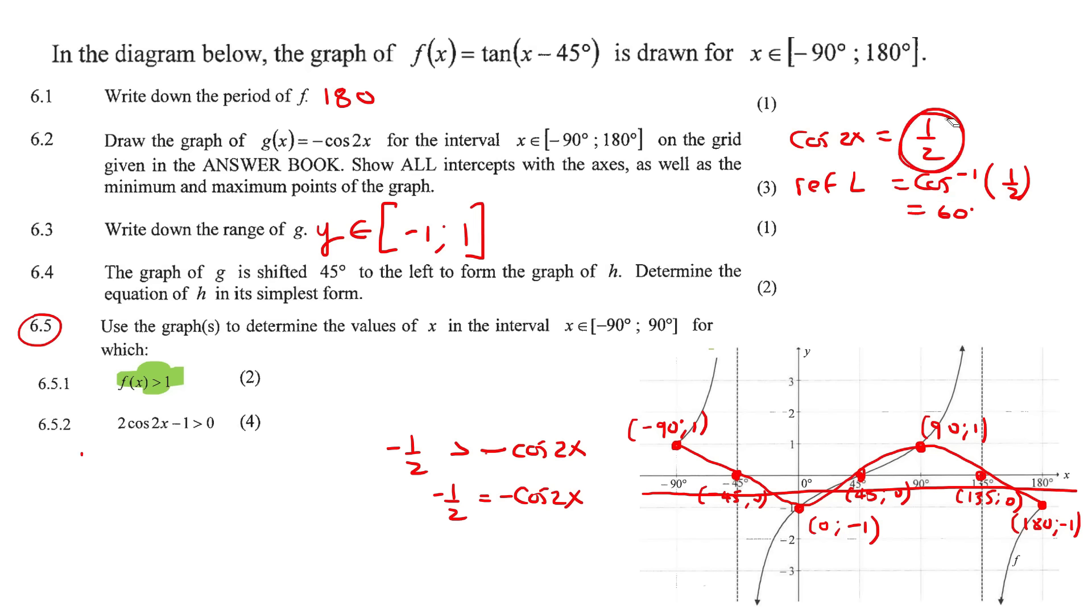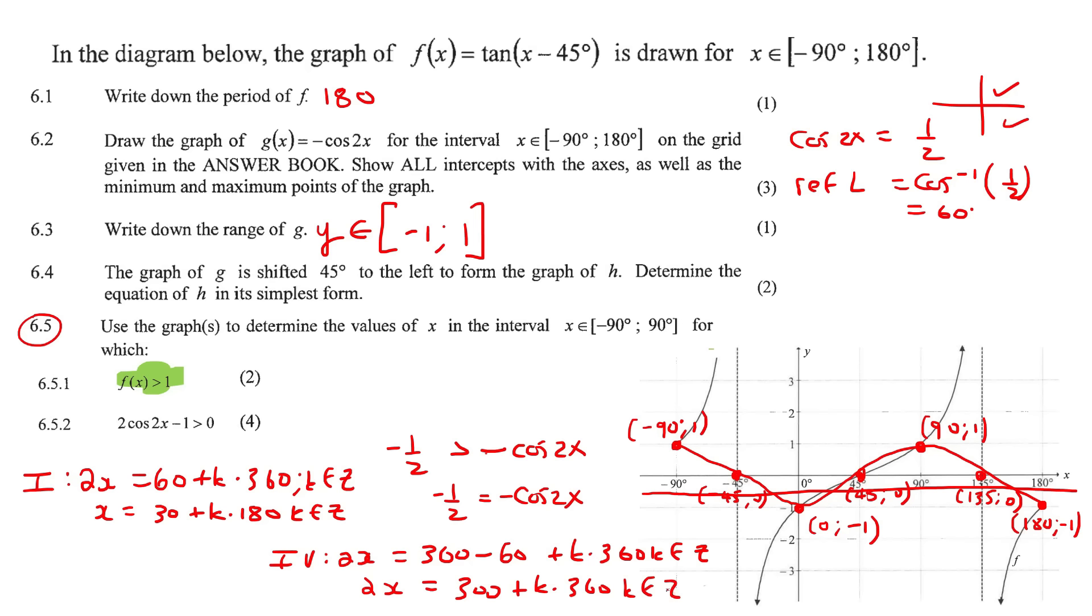Now it's just a general solution kind of question. So to get my reference angle, I just have to say shift cos of a half and that'll give us 60 degrees. Now they're saying that cos is a positive. So cos is positive in quadrant 1 and quadrant 4. So in quadrant 1, we could say that 2x equals 60 plus k360, k element of z. Then if you divide everything by 2, you would end up with that over there. Then for quadrant 4, you would say 360 minus your reference angle, plus k360, k element of z. And so if you solve this, you would end up with 2x is equal to 300, k element of z. And then if you divide by 2, you end up with 150 plus k times 180.